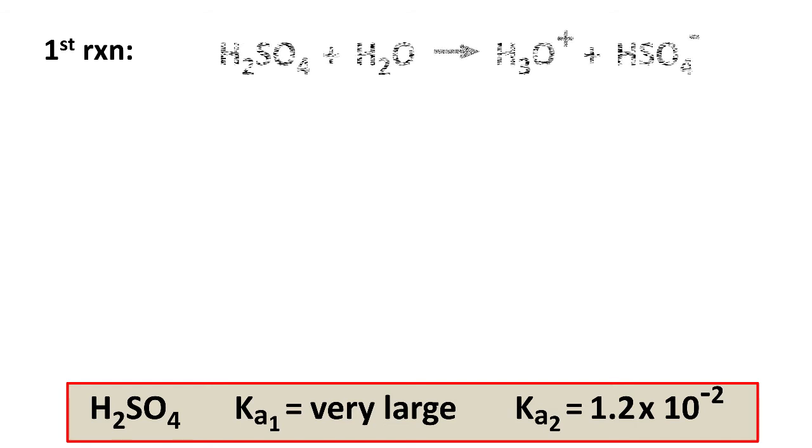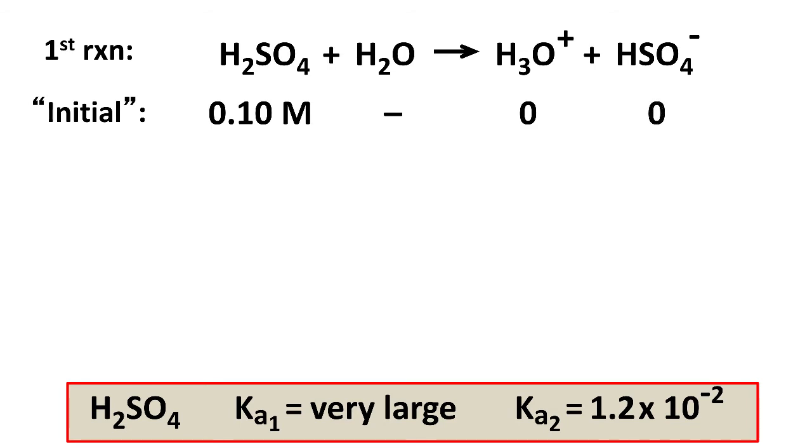And so the first dissociation is H2SO4 makes H3O plus plus HSO4 minus. Our quote-unquote initial concentration is the nominal 0.1 molar H2SO4, and we'll initially pretend it hasn't dissociated.